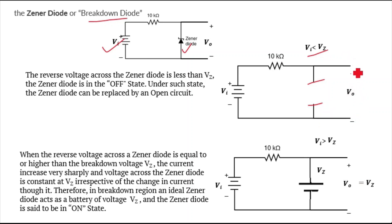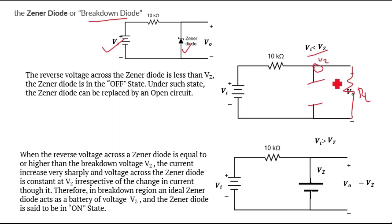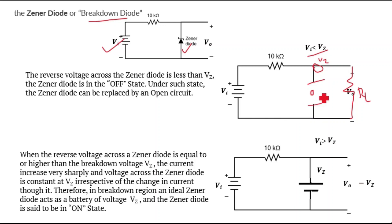If a load resistance RL is connected, the voltage at that point follows a potential divider relationship: VZ = V0 × RL / (RL + 10k). This is called the off state — when the reverse bias voltage across the Zener diode is less than VZ, the diode can be replaced by an open circuit.